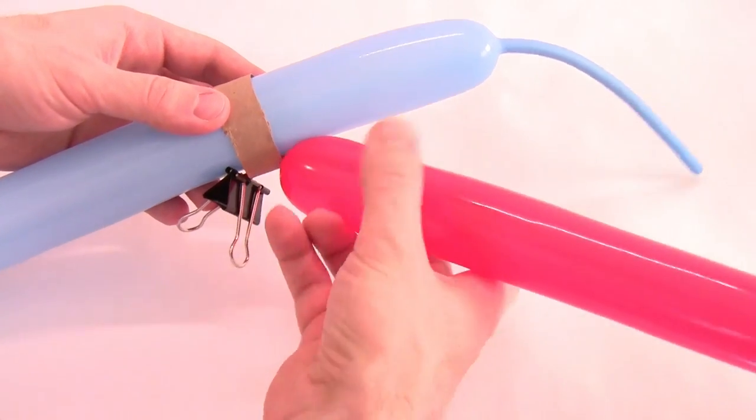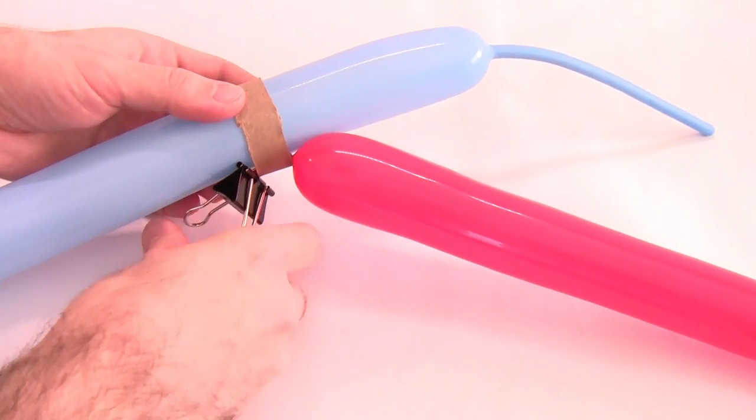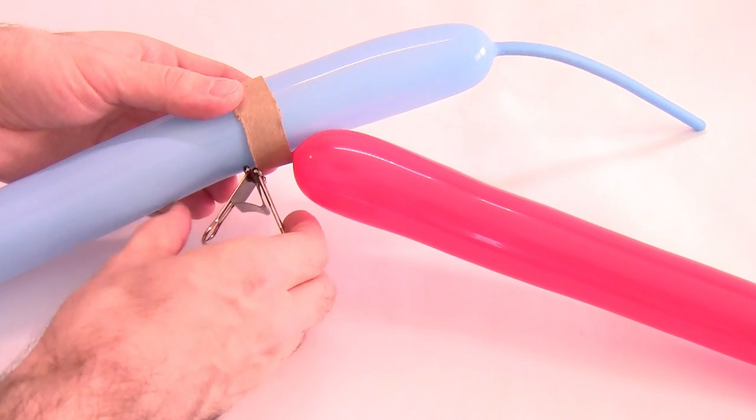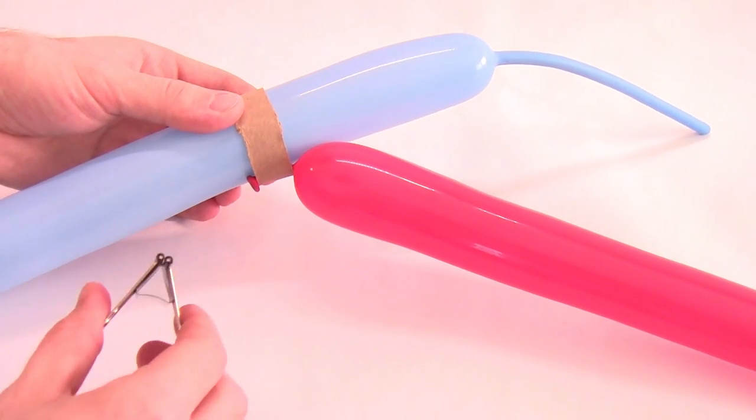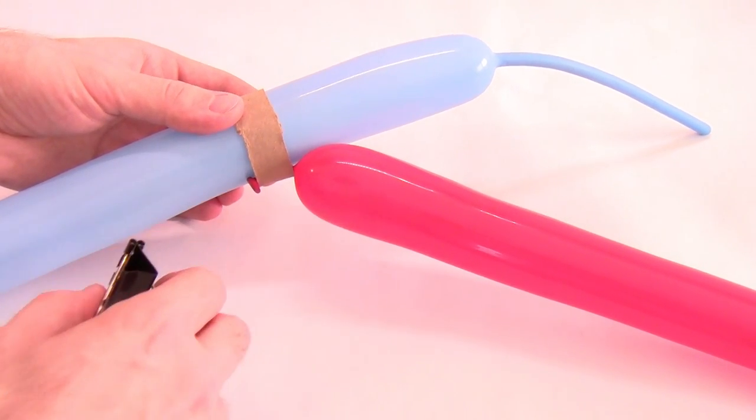It might help to twist the first balloon once or twice to help keep the nozzle shut. If you can't get it to stay inflated, you can leave the binder clip there for now. Here you can see that I've removed the binder clip and this balloon stays inflated.